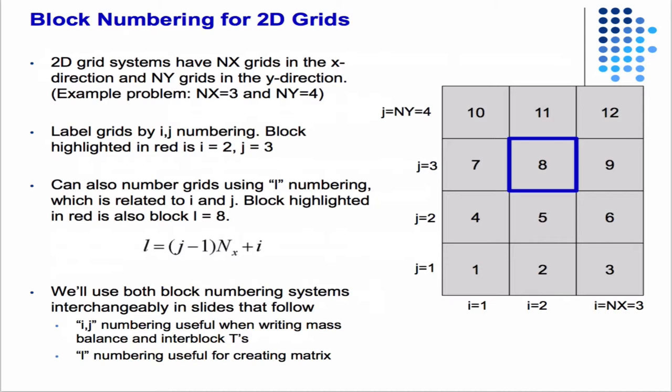However, when we're computing the individual entries of the matrix for the transmissibilities, it's convenient to use the i, j notation because in that context the interblock transmissibility is no different than it was in 1D. All you need are essentially the two arguments. In 1D you just had i and i plus 1.